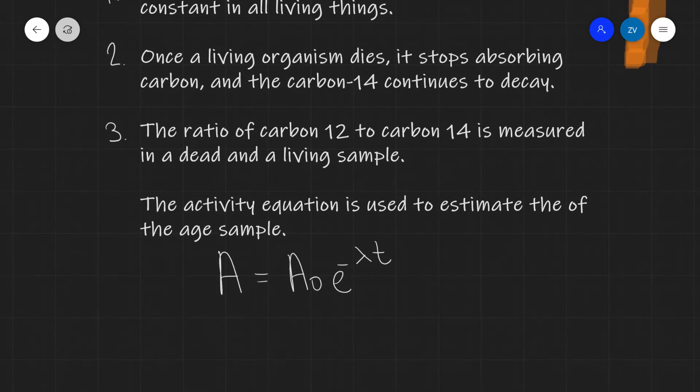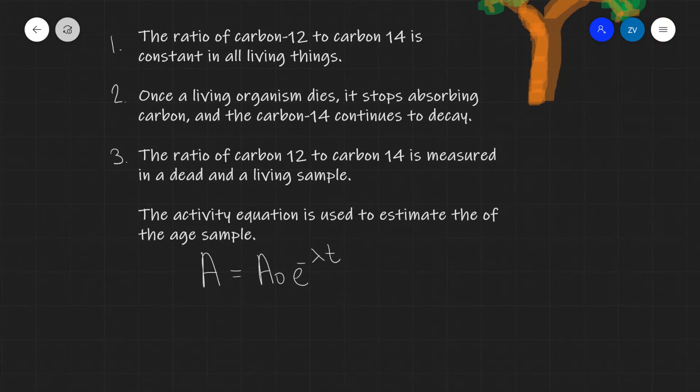Essentially, we can use the activity equation for this. Using this equation, A₀ will be essentially the activity of the living sample. We presume that this will be our initial activity.